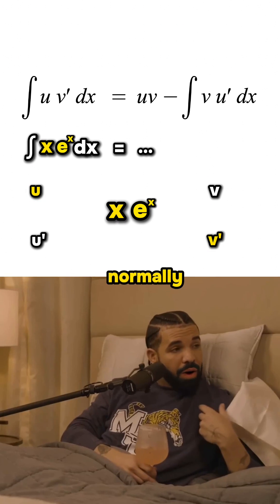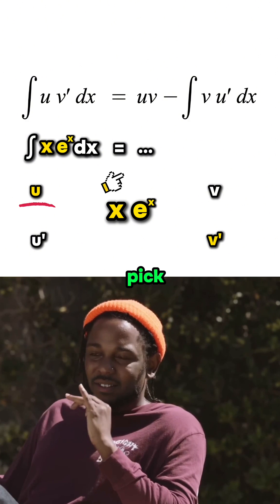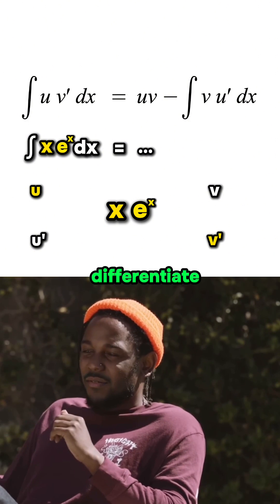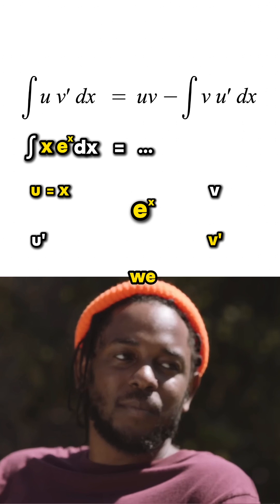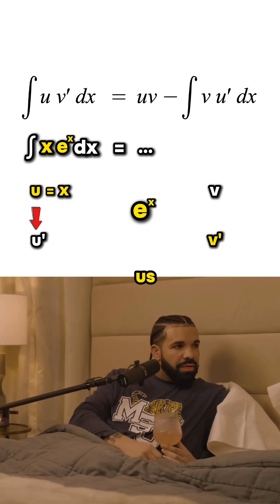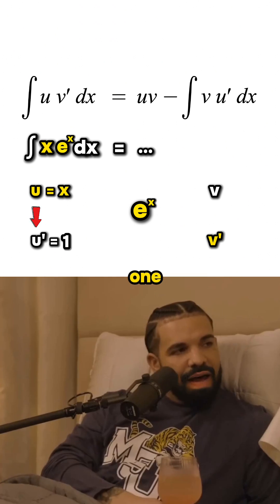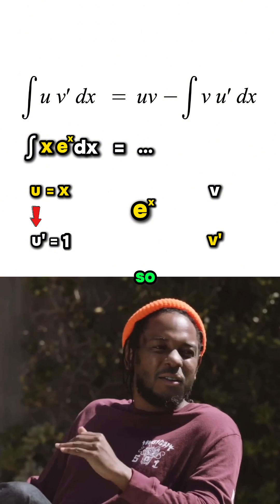I normally choose u first and try to pick the function which becomes most simple when you differentiate it. So is that gonna be x here? You betcha. If we say u is x, differentiating this gives us u prime which is just one, and one is super simple. So now we know u is x.